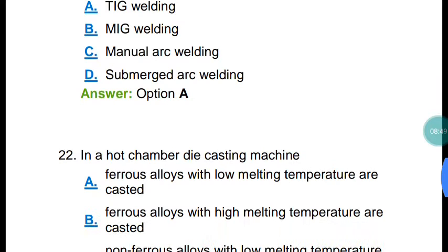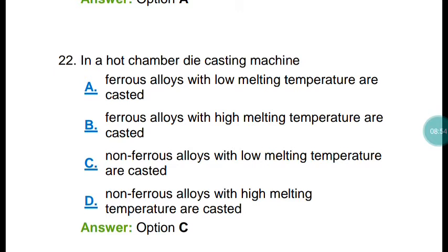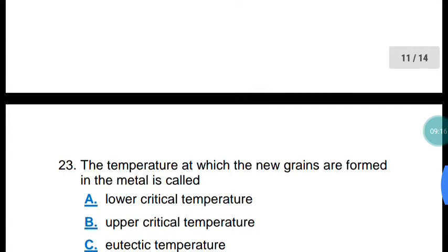Question number twenty-two: in hot chamber die casting, non-ferrous alloys with low melting temperatures are casted. In cold chamber die casting, metals with high melting temperatures are used. The correct answer is option C.